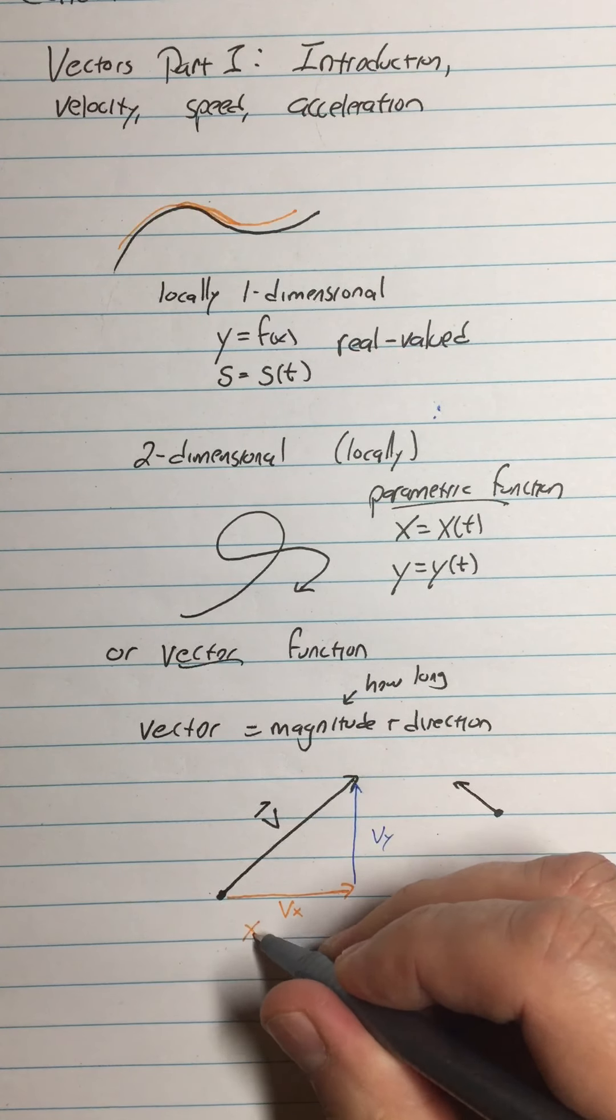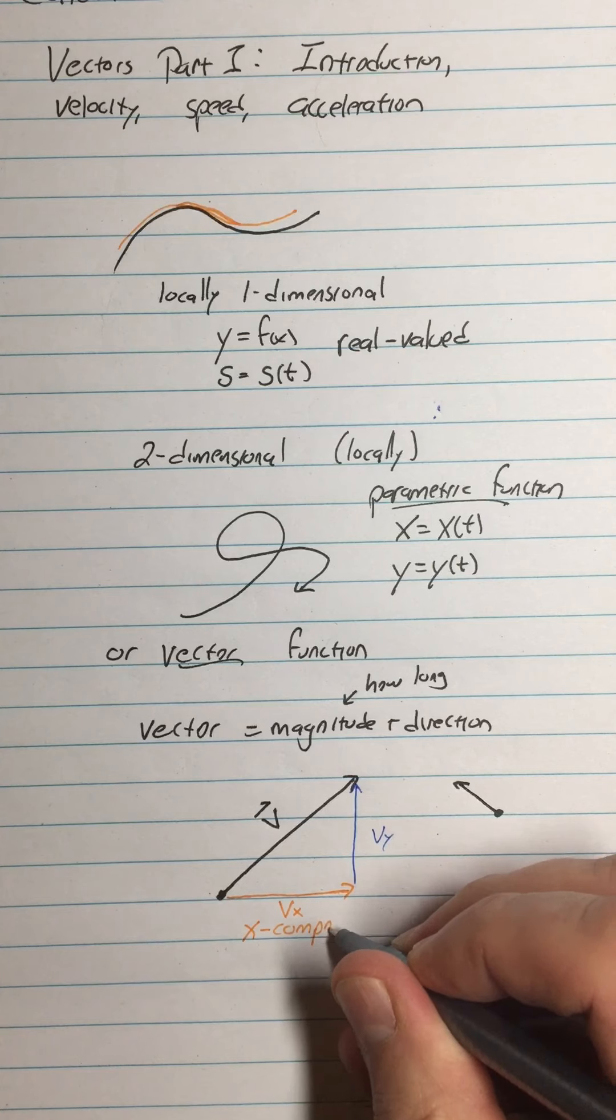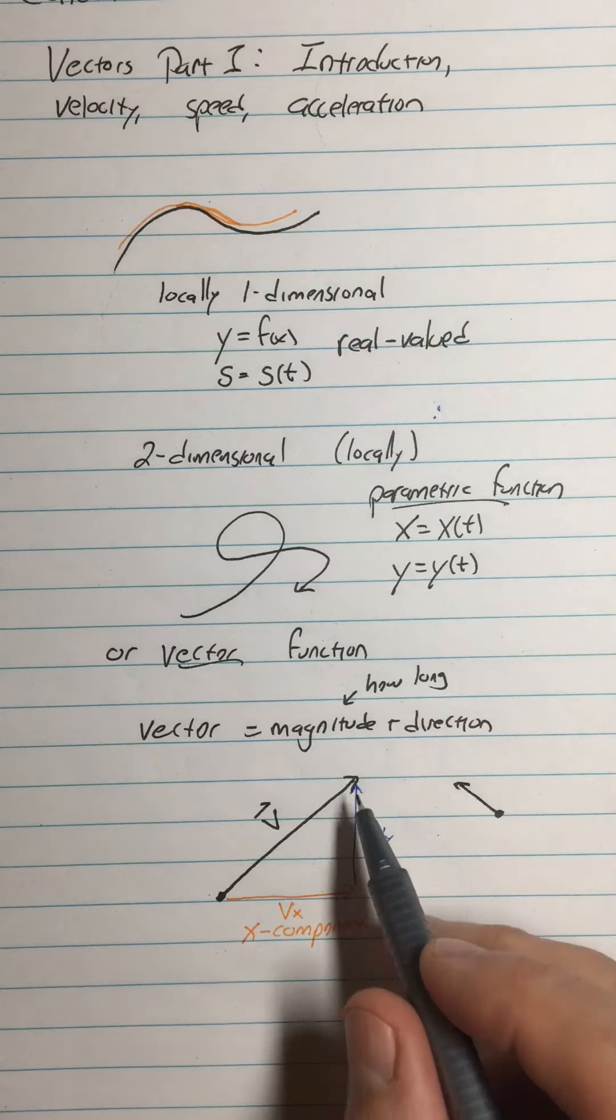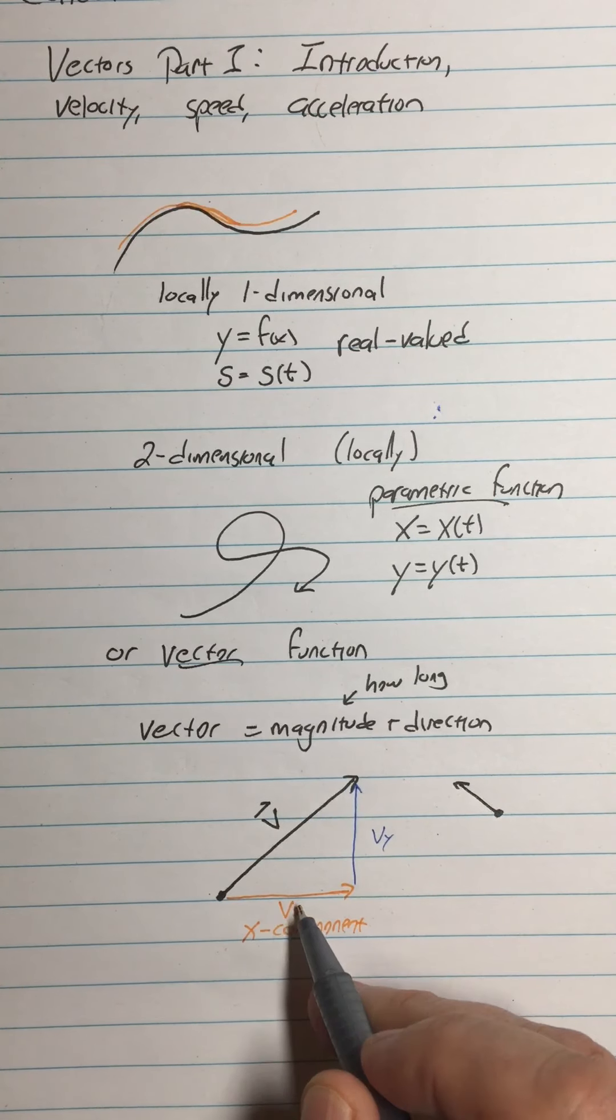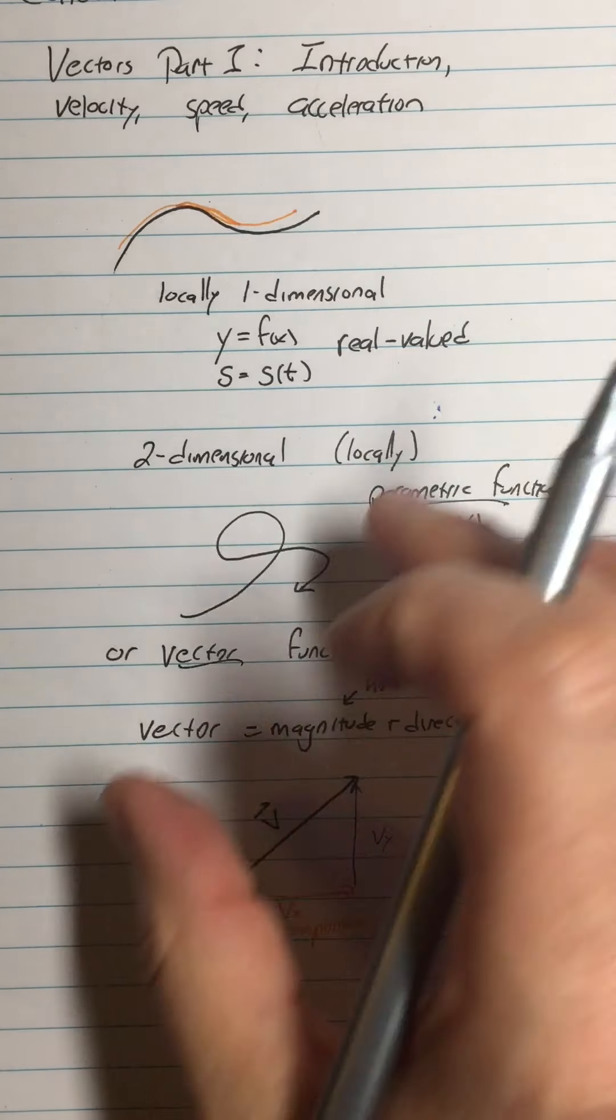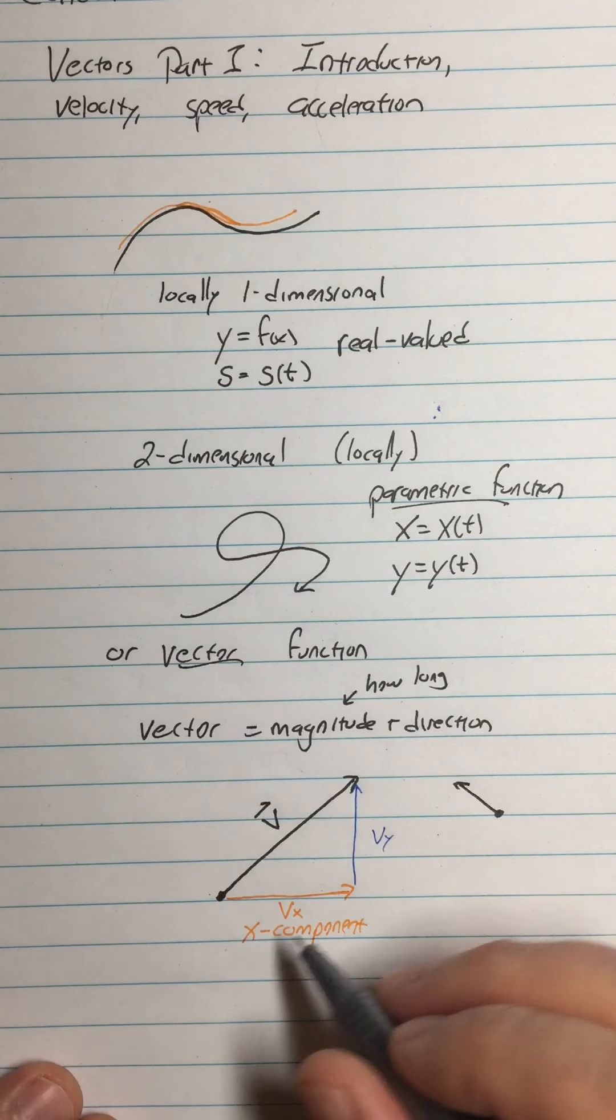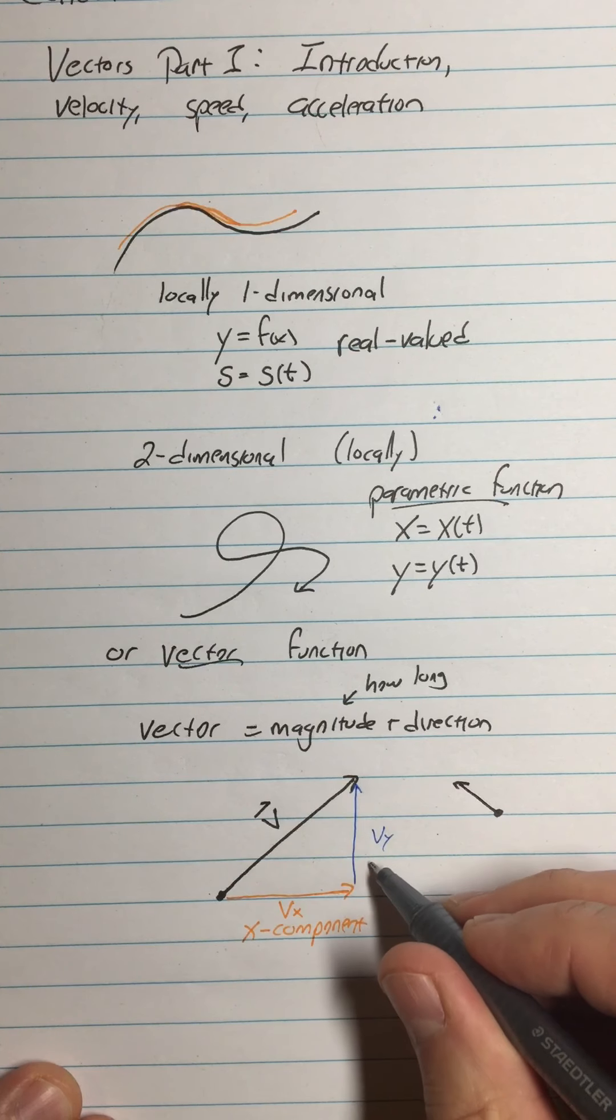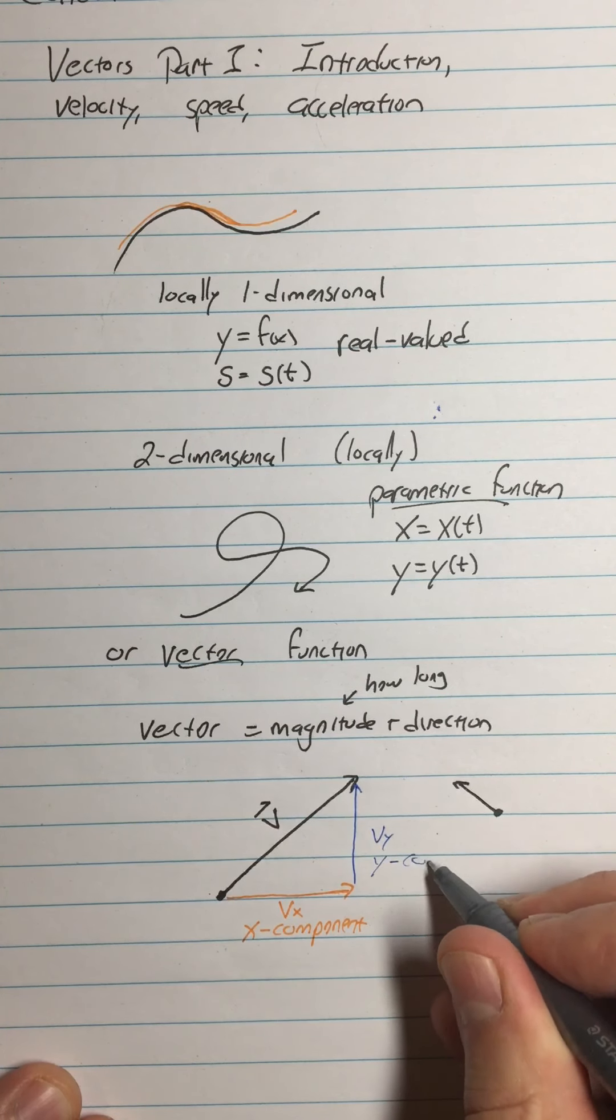And that's what we call them, we call them components. So this is the X component of the vector. A lot of these things are very similar to what we have in other contexts. So in other contexts we would call this a point, we would call this the X coordinate and the Y coordinate. Now this is a vector, it can sort of float around in space and VY is called the, instead of the Y coordinate we call it the Y component.